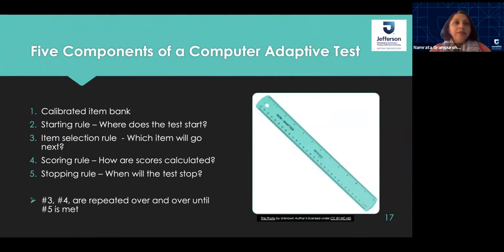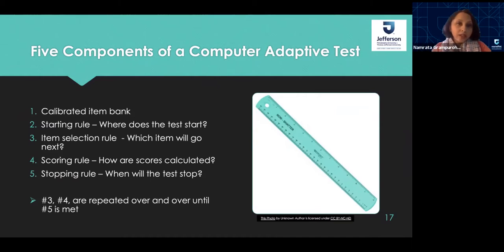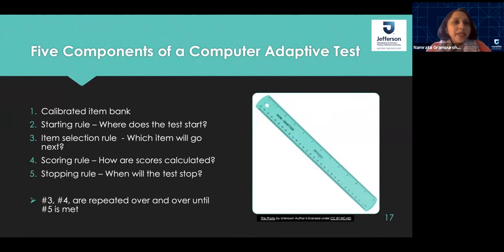I want to introduce five core components of a computer adaptive test. The first is a calibrated item bank. The next is the starting rule — at what point does the test start. Then the item selection rule — which item goes next. Next is the scoring rule — how are the scores calculated. And finally the stopping rule — when will the test stop. As a therapist, knowing this will help you decide if the test is appropriate for your purpose and make you a more knowledgeable practitioner.